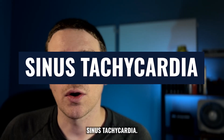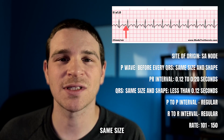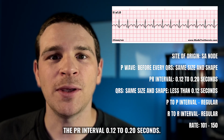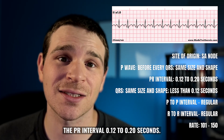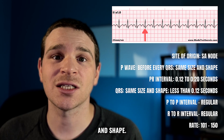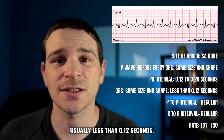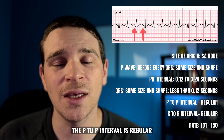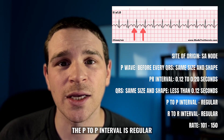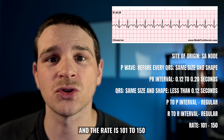Sinus tachycardia: the site of origin is the SA node. There's a P wave before every QRS, same size and shape. The PR interval is 0.12 to 0.20 seconds. The QRS will be the same size and shape, usually less than 0.12 seconds. The R to R interval is regular, the P to P interval is regular, and the rate is 101 to 150.